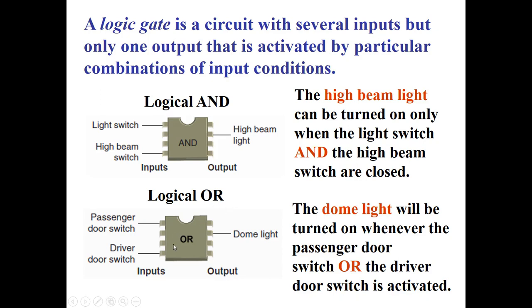The logical OR takes inputs, at least 2, 1 or more. And it looks for a 1 on any situation here and returns a 1 there. So if the passenger door switch is hit, the light, then the dome light comes on. OR the driver door switch turns a dome light on. There's probably other ways to turn your interior lights on in your car. That's the OR.